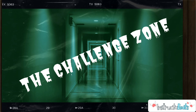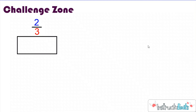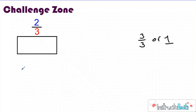Welcome to the challenge zone! For those who are new, the challenge zone is when we take a concept we just learned and take it to the next level. Your goal is to draw: if this part is equal to two thirds, what would one whole look like? What would three thirds look like if this is two thirds? Go ahead and pause the video, try this one out yourself, and then push play when you're ready to check your work — or if you're confused and need some help. It's okay if you're confused, because this is the challenge zone.